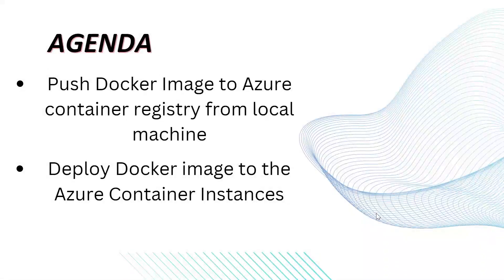Hello everyone. In this video, we are going to cover two things. First, we'll see how to push a Docker image from our local machine to the Azure Container Registry. And then we'll see how to deploy a Docker image into the Azure Container Instances and see how to access the application running in the Azure Container Instances. So let's get started.